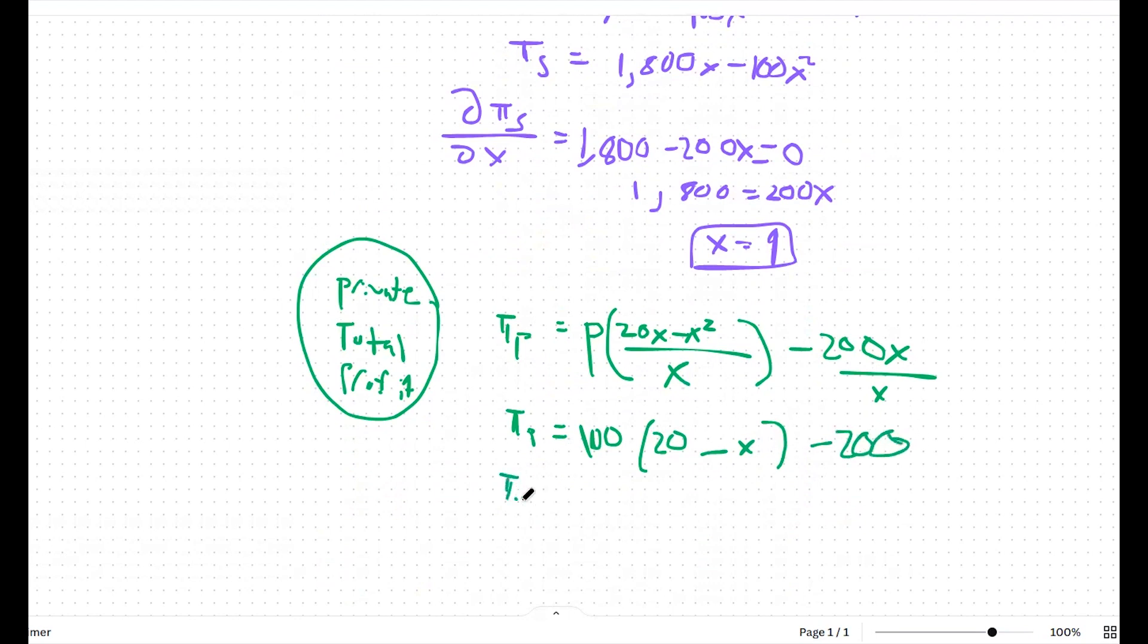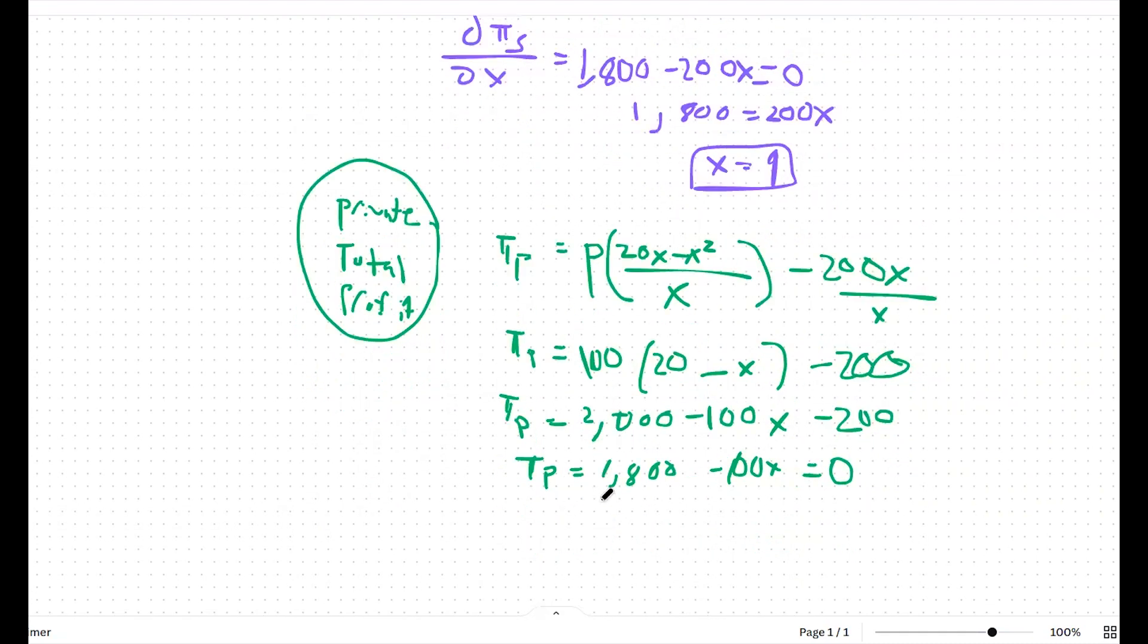So our private profit is equal to 2000 minus 100x minus 200. Private profit then is equal to 1800 minus 100x. And we're going to set this equal to zero because private profit will be driven down to zero when everybody overhunts these truffles.